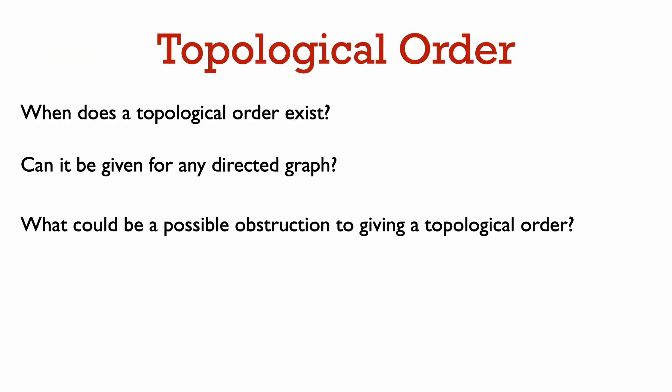So now we come to the first question about a topological order. When does it exist? Can we give a topological order to the vertices of any directed graph? Can you think of anything that might prevent a graph from having a topological order?